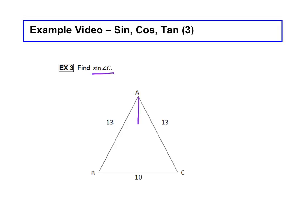An altitude, if you remember from geometry, goes straight down and forms right angles. Well, now we have two right triangles.